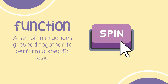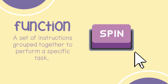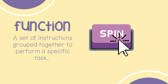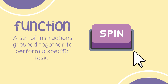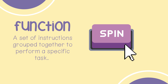A function is a set of instructions grouped together to perform a specific task. Instead of writing the same code multiple times, you can create a function and use it whenever you need it. Functions help organize code and make it easier to read and use. For example, in a game you might have a function called jump or spin that makes a character spin or jump. Instead of writing all the code for spinning every time, you just call it spin when needed.